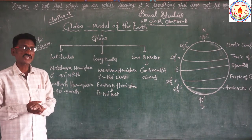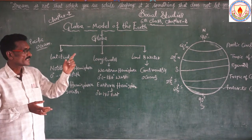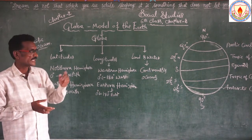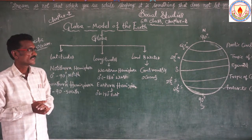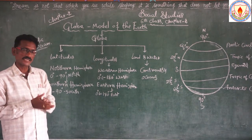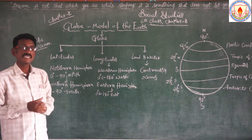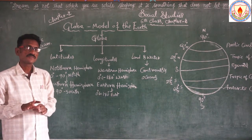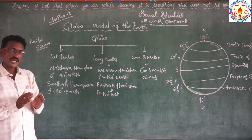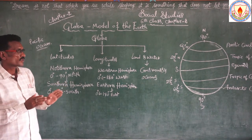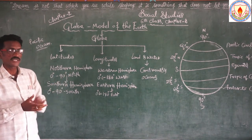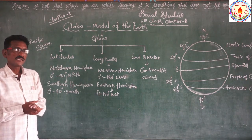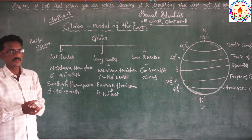The Western Hemisphere also exists. From 90 degrees north to zero degrees equator, the eastern part is called the Eastern Hemisphere. And from zero degrees equator to 90 degrees south pole, that part is called the Western Hemisphere.